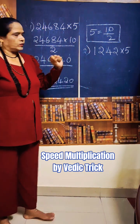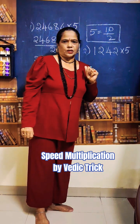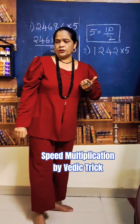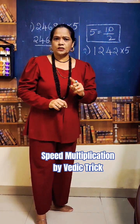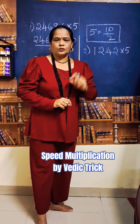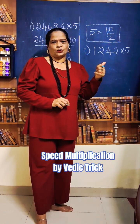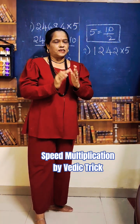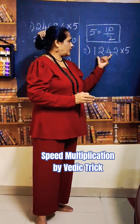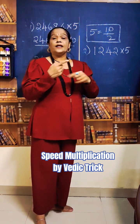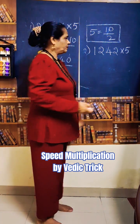See here, one more. Same trick we can use here. No need to use multiplication tables of 5. Instead of that, use 10 divided by 2. That means, add one 0 to the given number and divide by 2. That's it.